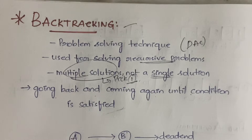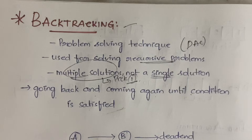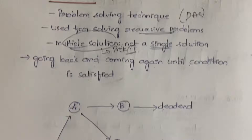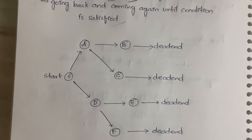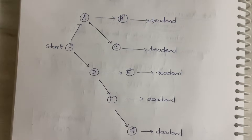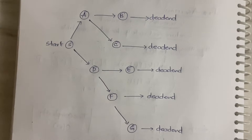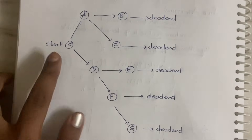Going back and coming forward again until the condition is satisfied — that is what happens in backtracking. You go back, you come forward, you go back, you come forward, until you get the solution. Let us see backtracking with an example.